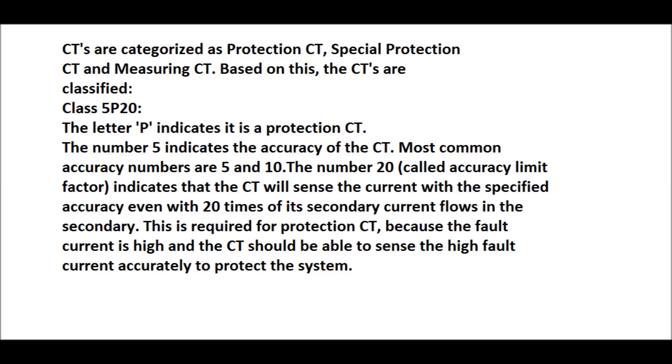CTs are categorized as protection CT, special protection CT and measuring CT based on these. CTs are classified as P5P10 or P5P20 such as the letter P indicates in this case as a protection CT. The number 5 indicates the accuracy of the CT. Most common accuracy factor are 5 or 10.